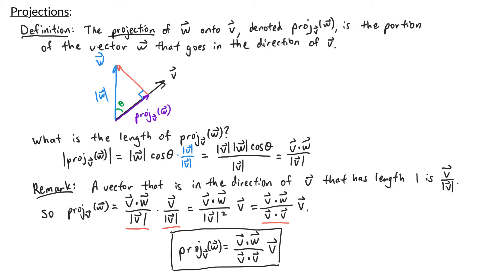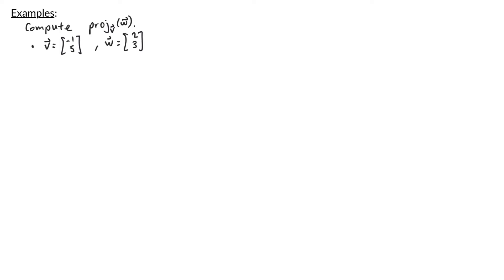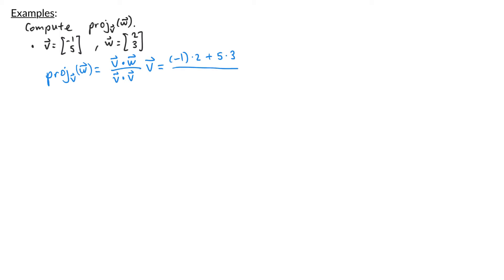So let's now look at some examples. In our first example, we have the vector v with entries negative 1, 5, and w with entries 2, 3, and we're asked to find the projection of w onto v. So according to our formula, the projection of w onto v is equal to v dot w divided by v dot v times the vector v. So v dot w would be negative 1 times 2 plus 5 times 3, divided by v dot v, which is negative 1 squared plus 5 squared. All of this times the vector v, which is negative 1, 5.